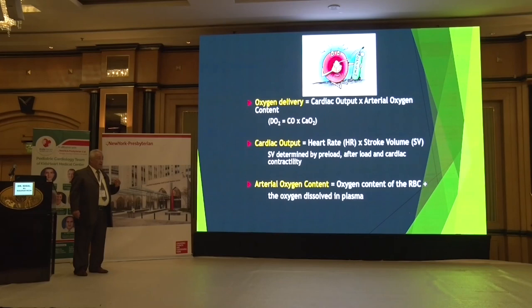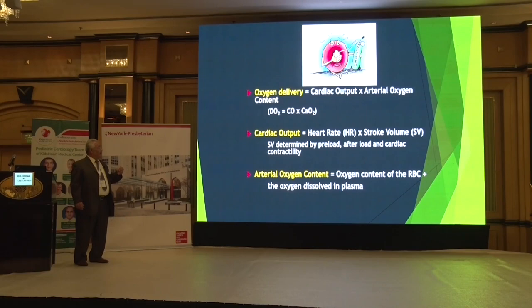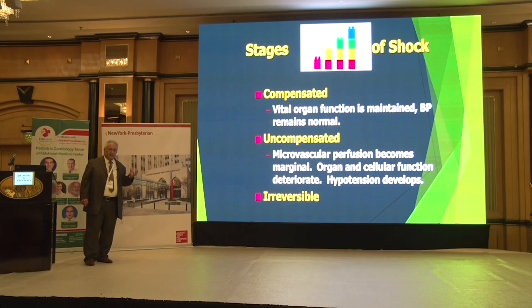Oxygen delivery is simply the cardiac output times the arterial oxygenation content, while the cardiac output is the stroke volume times the heart rate. Arterial oxygen content is the oxygen contained in the RBCs and in the plasma.